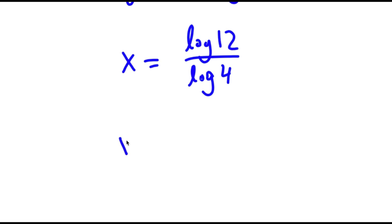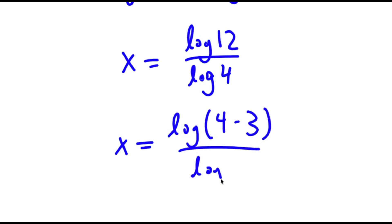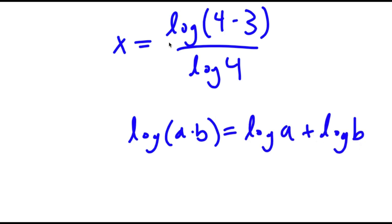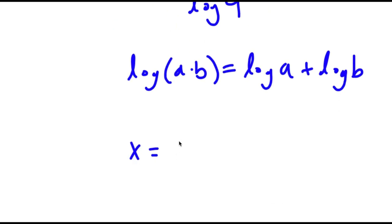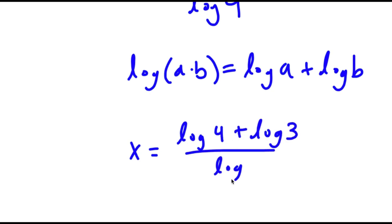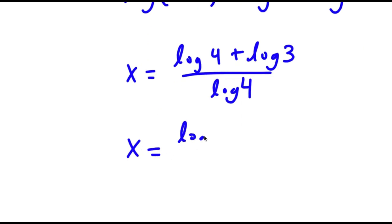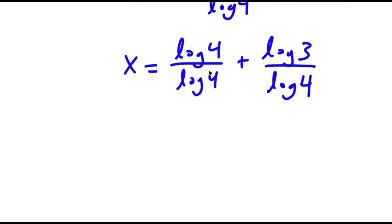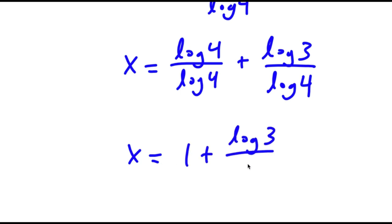Now log 12, that's equal to log of 4 times 3, and I have this over log 4. If I have something in the form log of a times b, this is equal to log a plus log b. So log 4 times 3 equals log 4 plus log 3, all over log 4. This is equal to log 4 over log 4 plus log 3 over log 4. Now log 4 and log 4 cancel out, so now I have 1 plus log 3 over log 4.